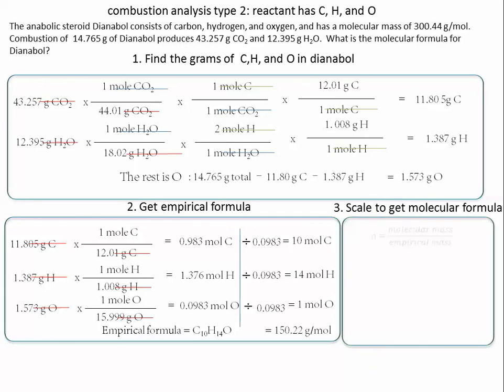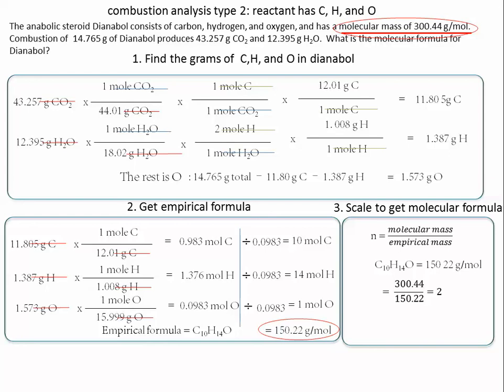Scale to get the molecular formula. We get something called a scaling factor, n, which is the molecular mass over the empirical mass. It's going to be 300 divided by 150. And there it is. 300 divided by 150 is 2, so double the empirical formula to get the molecular formula.